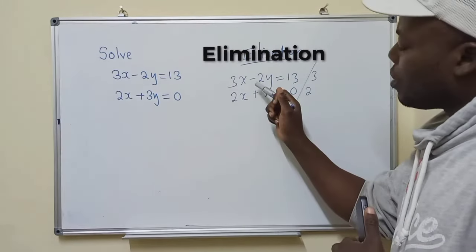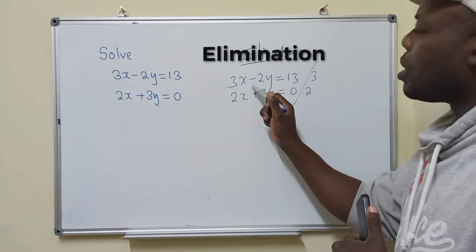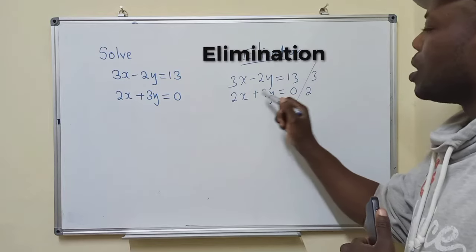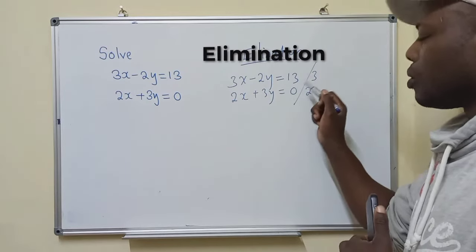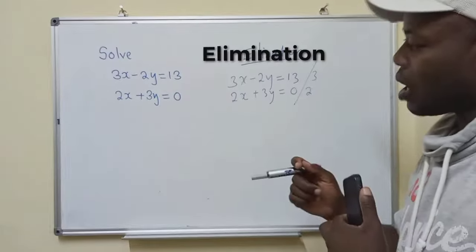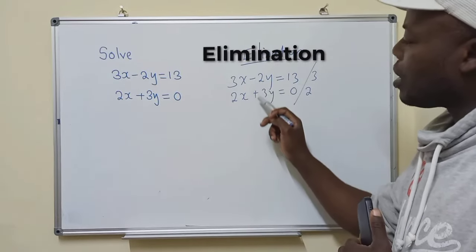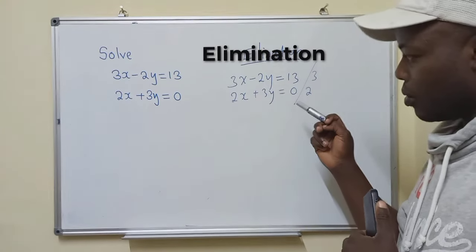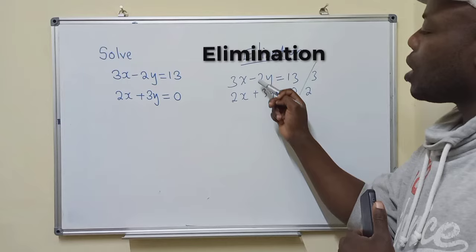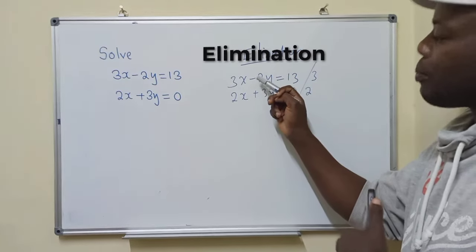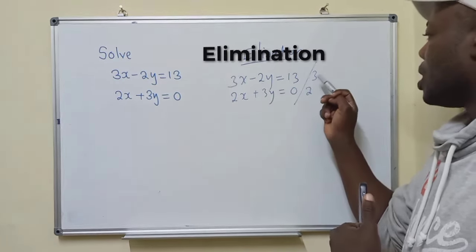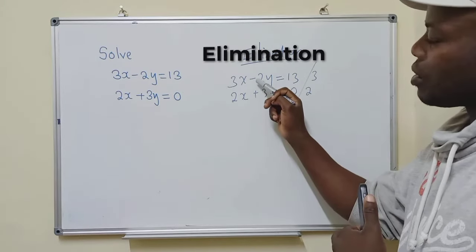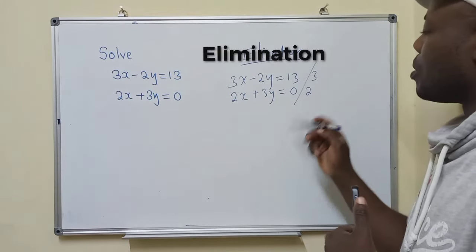You switch them. If the signs are the same—if we are negative, negative—we would have put one of these a negative. If it is positive, positive, we would have changed. So remember this key point: when the signs are the same here, put one of these a negative. If the signs are different, in this case we have negative and positive, just leave them the way they are.